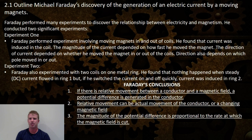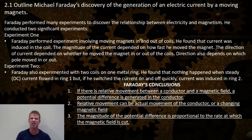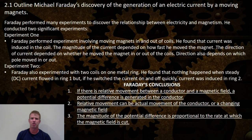Experiment 1: Faraday performed an experiment involving moving magnets in and out of coils. He found that current was induced in the coil. The magnitude, or size, of the current depended on how fast he moved the magnet. The direction of current depended on whether he moved the magnet in or out of the coil, and also depended on which pole — north or south — moved in or out.